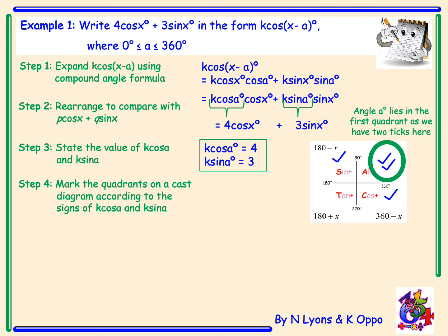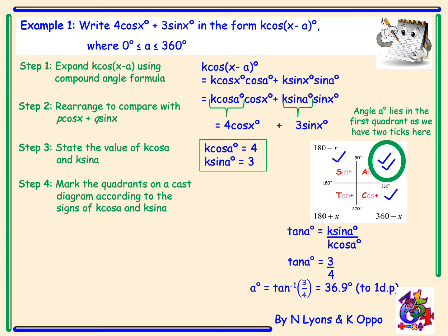To work out angle a, we use the rule tan a equals k sin a over k cos a. It's extremely important to remember to put k in front of the sin a and cos a, because if you miss this you will lose a mark in the exam. Therefore tan a equals 3 over 4, and if we take the inverse tan of 3 over 4 we get an answer of 36.9 degrees to one decimal place. That is the size of angle a that will go inside our bracket.